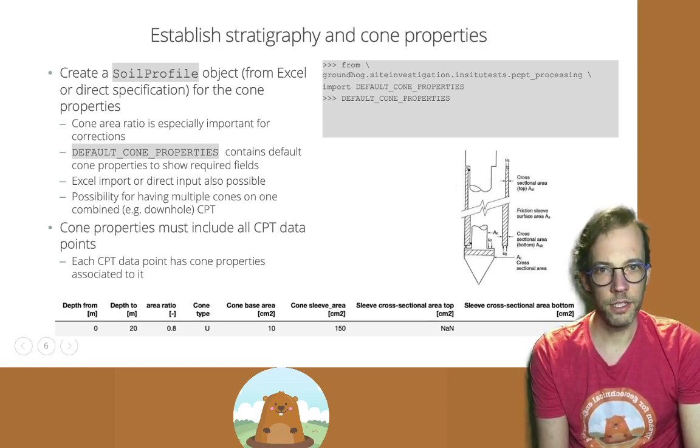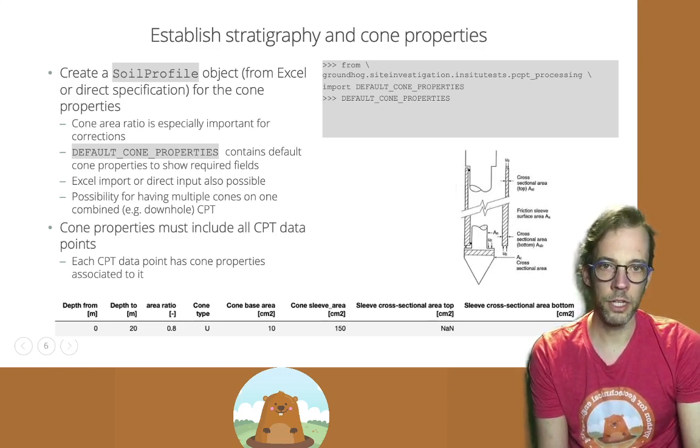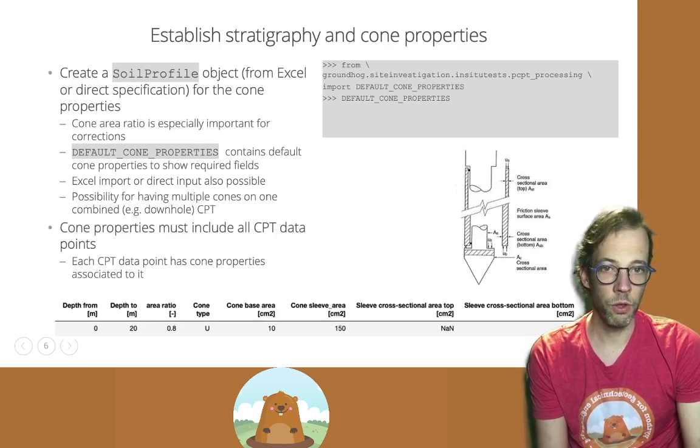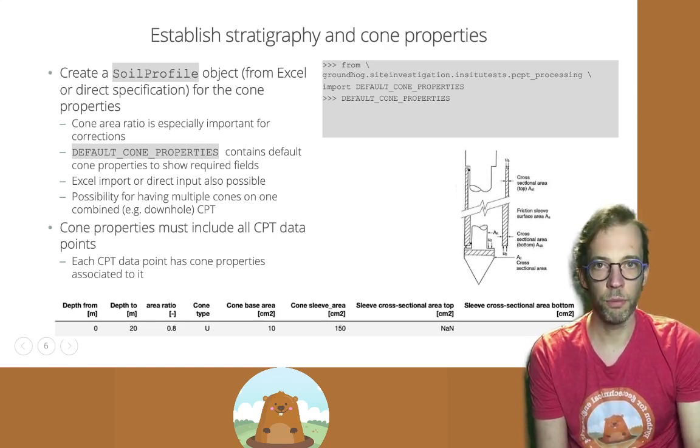Again, each of these CPT data points that has been measured corresponds one-on-one to a given cone property. And in the next slide, we'll show you how to map each point to its corresponding layer and corresponding cone property.